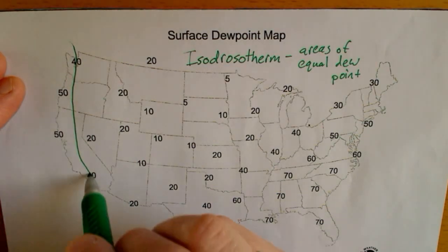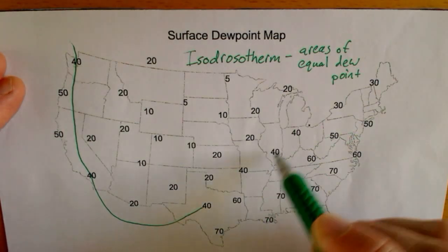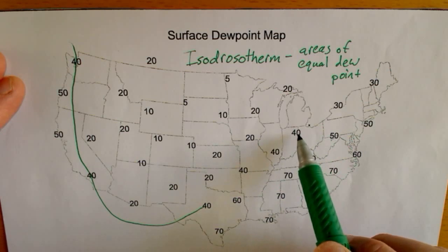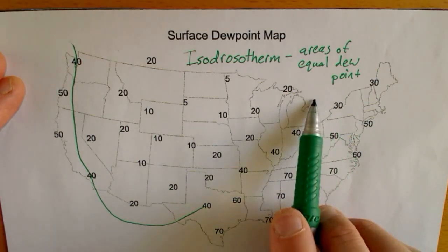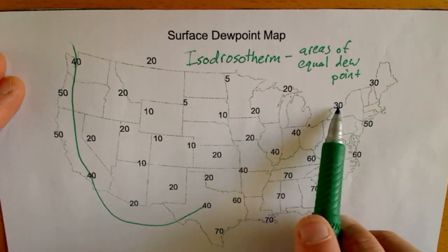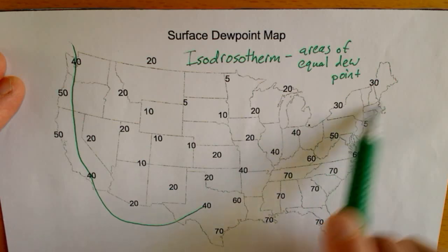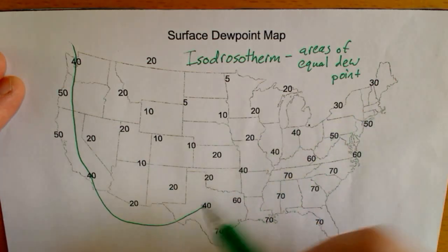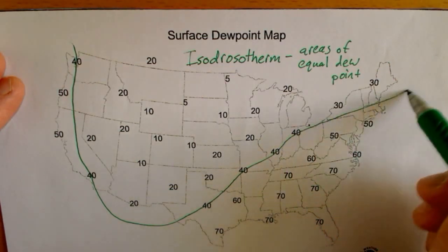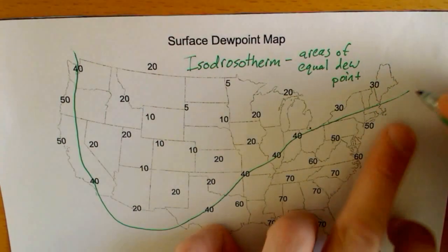There's a 40 in Texas, so I'm going to have to go all the way around through Missouri. Once I get to Indiana, if I went above, I'd be between 20 and 30, so 40 is not between 20 and 30. Going more towards New York — between 30 and 50 — yes, I'm going to have to go right through Massachusetts. So 40, 40, 40 through the middle there, and this is the isodrosotherm for 40 degrees.